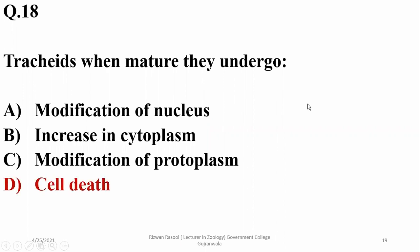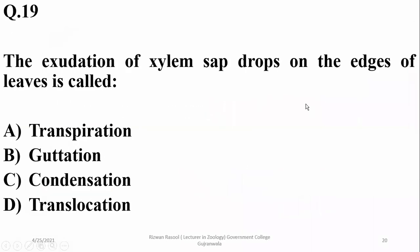Water and minerals then usually go through plasmodesmata or the symplast pathway in the next compartments. Question eighteen: xylem cells, when mature, undergo cell death because in their final state they are just cell walls. The exudation of xylem sap droplets on the edges of leaves is known as guttation — so Beta is correct.